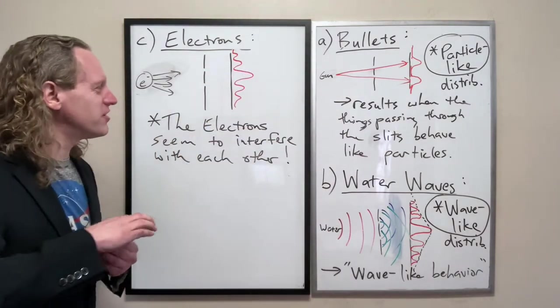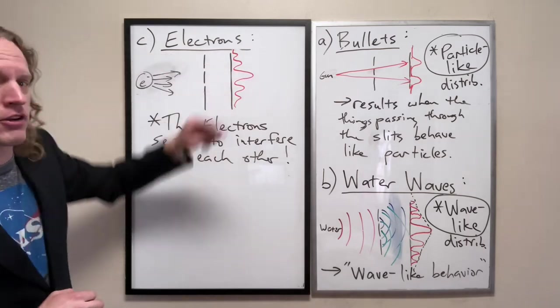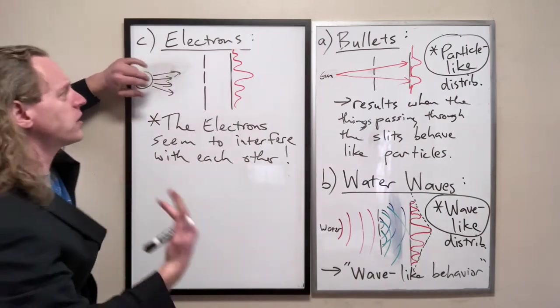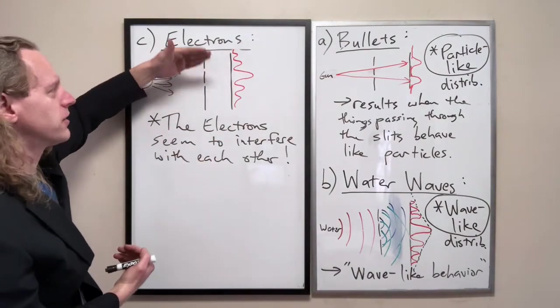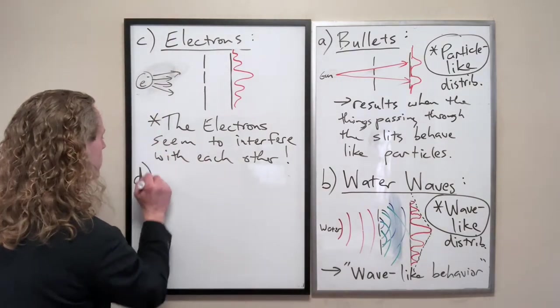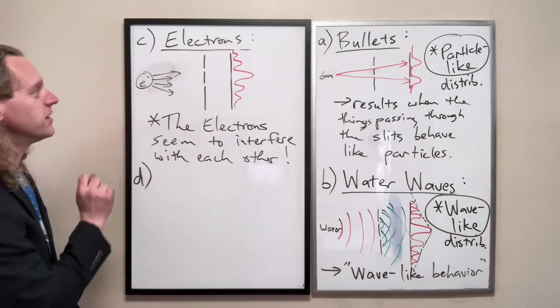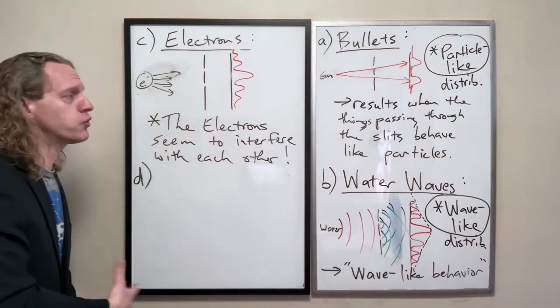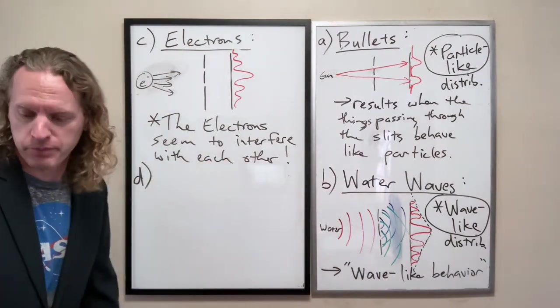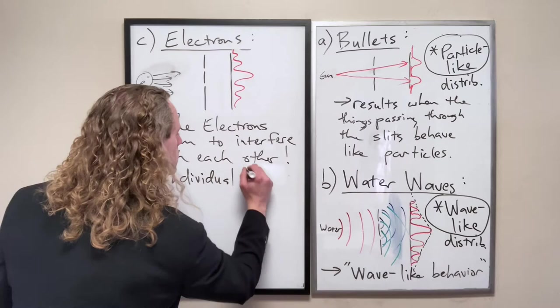So we have a genius idea now. Instead of sending out a whole stream of electrons, like an electron machine gun where we're sending out all these electrons, we're going to try to avoid this possibility of those electrons interacting with each other and interfering with each other. What we're going to do now is slow this electron gun down so that instead of sending out 10 to the 20 electrons per second, we're going to send out one electron per second or one electron per minute. So we're going to send individual electrons.